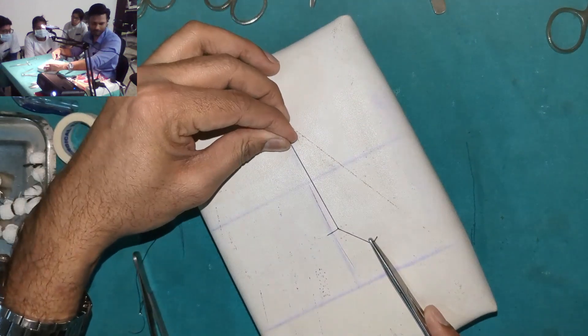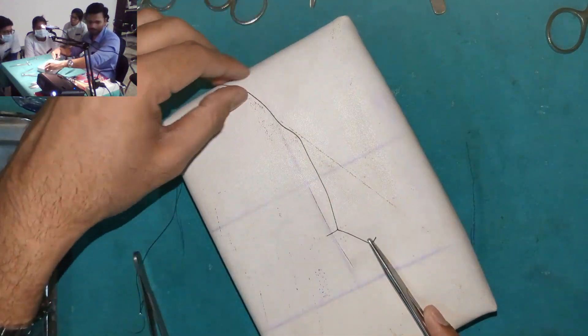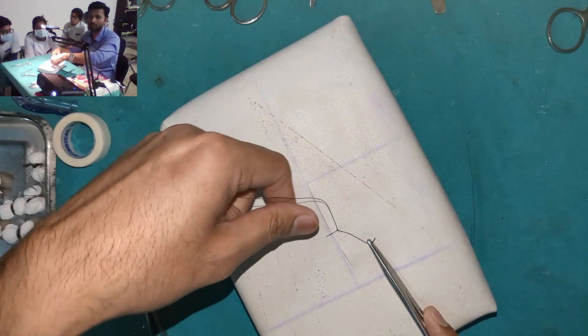Ideally, you use this as a guide, and you just pull this, and the knot forms here. This was one throw in clockwise direction, right?